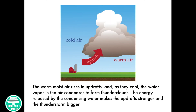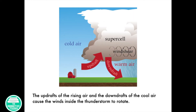The warm moist air rises in updrafts and as they cool, the water vapor in the air condenses to form thunderclouds. The energy released by the condensing water makes the updraft stronger and the thunderstorm bigger. The updrafts of the rising air and the downdrafts of the cool air causes the winds inside the thunderstorm to rotate.